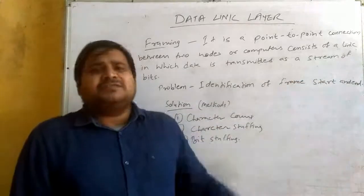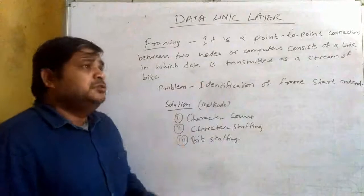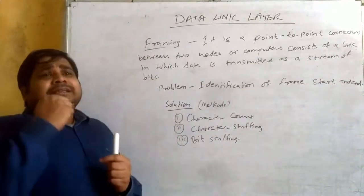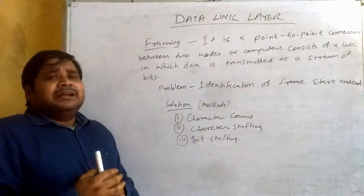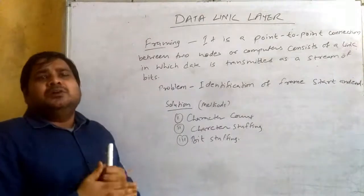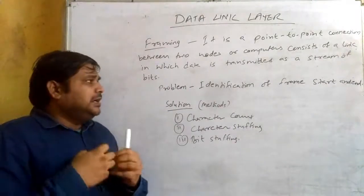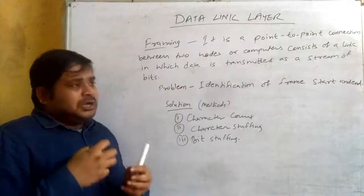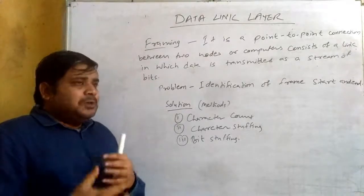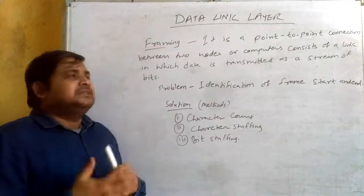In every frame, a bit stream is traveling — 1-0, 1-0, 1-1. So this means: how can we identify where the frame starts and where the frame ends? This is the start and end identification problem in framing, and it will be solved by many methods.